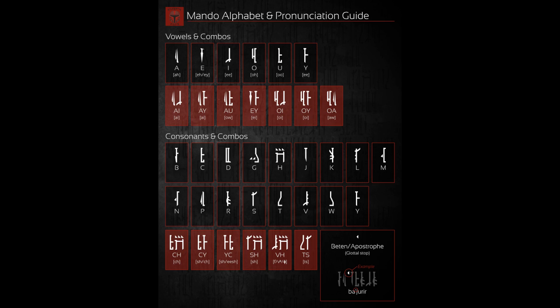Now we have the consonants, which are mostly self-explanatory, but some need to be explained a little bit more in depth. The B is a B, obviously. C is a little bit more complicated because it sounds like an S before an I or an E, but it sounds like a K before an A, an O, or a U. D is D. G is G, like a G.